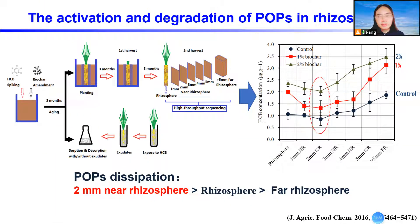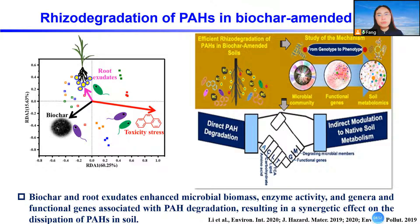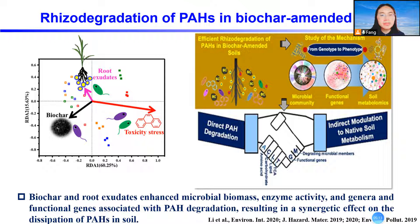We also found that rhizosphere degradation is a hotspot for dissipation of chemicals in the soil system. Especially within the 2 mm near the rhizosphere, it shows the highest dissipation compared to the bulk rhizosphere zone. This is mainly because biochar and root exudates combine to enhance microbial biomass, enzyme activity, and the functional genes associated with chemical degradation, resulting in enhanced dissipation of chemicals in contaminated soil.